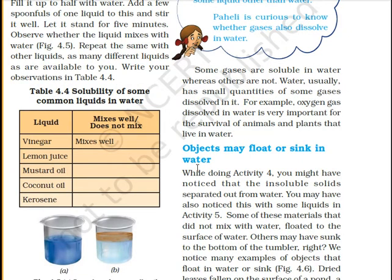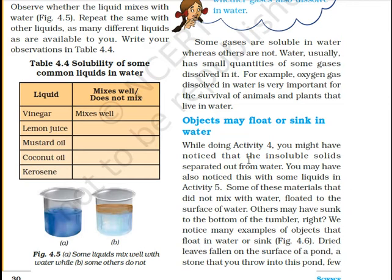Objects may float or sink in water. I hope you must know the meaning of 'float' — float means to stay on top. 'Sink' means to go down and submerge. While doing Activity 4, you might have noticed that insoluble solids separated out from water. In Activity 5, some materials that did not mix with water floated to the surface, while others sank.